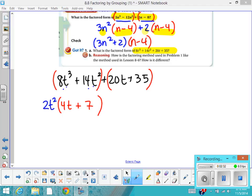Next, I'm going to look at these two terms that I've grouped together and look for the GCF there. So the biggest thing that goes into 20 that also goes into 35 is 5. And there's no variable common to both terms.